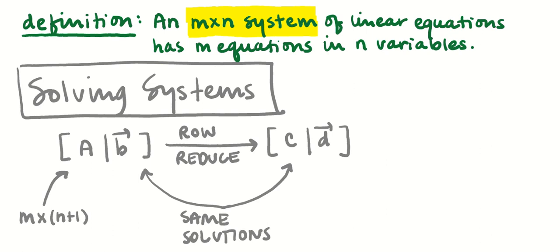The row reduction — doing these row operations — does not change the dimensions of the matrix. So C augmented with d is also an m by n+1 matrix. I'm going to make some comments and draw some conclusions about these systems based on C augmented with d, not based on properties of A augmented with b. I'll jump forward and start by saying some things that I think you've already started to notice.